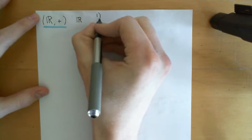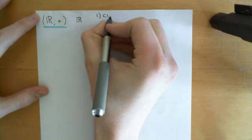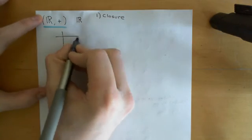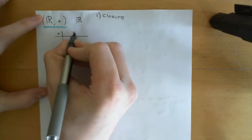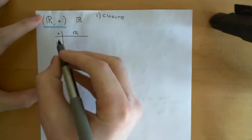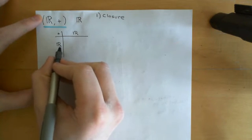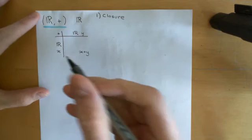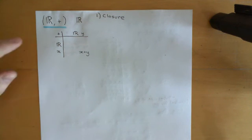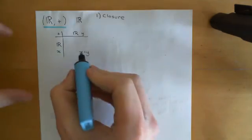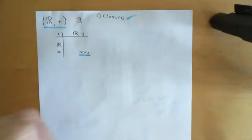Let me go through the argument that this forms a group. The first axiom is closure. If you compose any two real numbers together, you have to get another real number. So if I take arbitrary x and y and add them together to get x + y, I must get another element back in my set. Hopefully you're familiar with the fact that if you add any two real numbers together, you end up with another real number. So we can tick off closure.